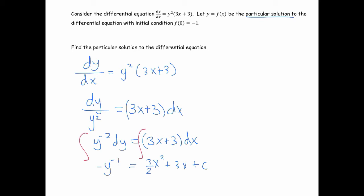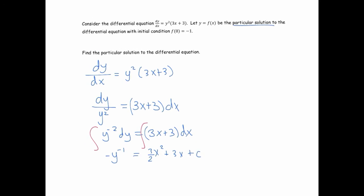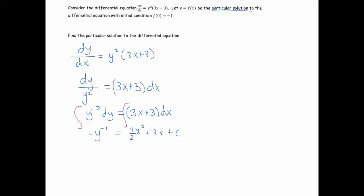Alright, okay, so now we have a couple options. We can find c right now or we can solve for y and then find c after. I guess I'll find c now. We know that when x is 0, y equals negative 1. So if I plug in negative 1 here, I get negative negative 1 to the negative 1, and that equals the whole right side which is going to become 0 except for the c. So negative 1 to the negative 1 is 1 over negative 1, which is negative 1, but then I'm taking the opposite of that, so c is 1. That's a lot of negatives there, but c is 1.